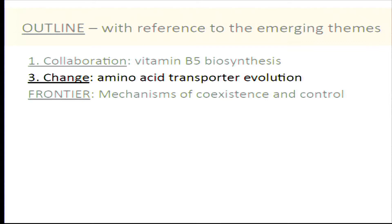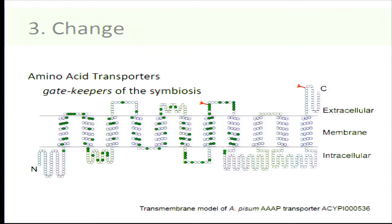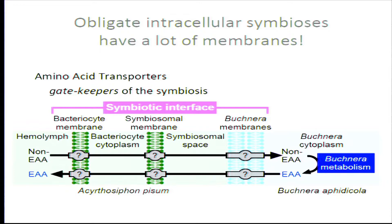Now to the next story about change. We started working on amino acid transporters in my lab after the pea aphid genome was published. Amino acid transporters are transmembrane proteins that move amino acids from one side of membranes to the other. Membranes are something these intracellular symbioses have a lot of. Dietary amino acids cross the gut interface, move into the hemolymph, cross the bacteriocyte membrane, and in the aphid system the symbionts are surrounded by a host-derived symbiosomal membrane, plus the inner and outer membranes of Bucknera.